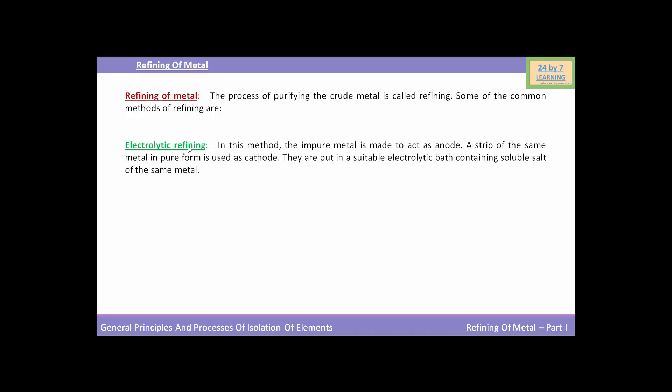Number one is electrolytic refining. This method is based upon the phenomena of electrolysis. In this method, the impure metal is made to act as anode, and a strip of the same metal in pure form is used as a cathode. They are put in a suitable electrolytic bath containing soluble salt of the same metal. After completing the circuit, the current is passed through it, so metal ions from the electrolyte are deposited at the cathode in the form of pure metal.